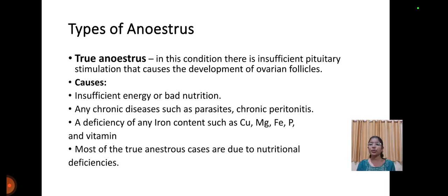Types of anestrus. True anestrus: in this condition, there is insufficient pituitary stimulation that causes the development of ovarian follicles. Causes include insufficient energy or poor nutrition, any chronic disease such as parasitism, and deficiency of mineral content such as copper, magnesium, and vitamins. Most true anestrus cases are due to nutritional deficiencies.